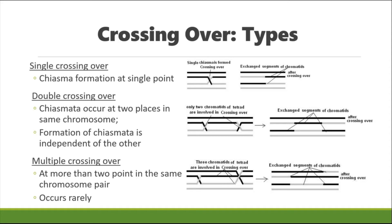There are different types of crossing over depending on the number of exchange points. When a chiasma is formed at a single point, it is called single crossing over. When there are two points, it is called double crossing over. There can also be more than two points — three, four, or five — making multiple forms of crossing over possible.